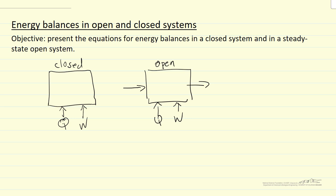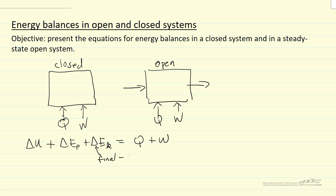Let's look at the equations. First, for this closed system, we say the change in internal energy of the system plus the change in potential energy plus the change in kinetic energy is equal to the heat added plus the work done on the system. When I use the symbol delta, this means final minus initial. So at a given initial time and some later time, the energy has changed — we've added heat, for example, when the gas has gotten hotter, and that's related to delta U.